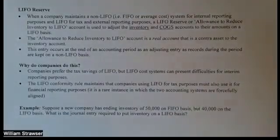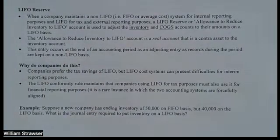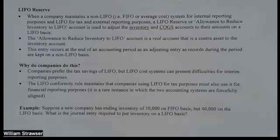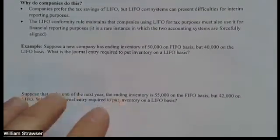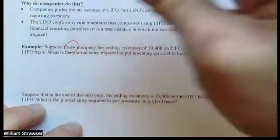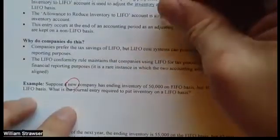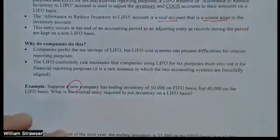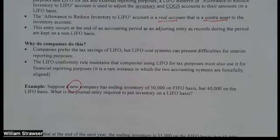Remember, the LIFO reserve account is used when we're going from a non-LIFO to LIFO. It is used by companies that do not want to record their day-to-day activities in LIFO during the period, but then want to reap the benefit of LIFO reporting for tax purposes. The LIFO reserve is a real account — it is a contra asset to the inventory account, so it reduces the balance reported for the inventory account. Contra and adjunct accounts exist solely to merge with their parent account in a ledger to be reported on a financial statement.